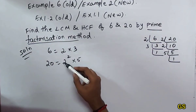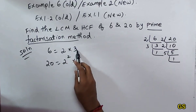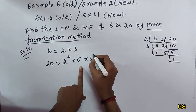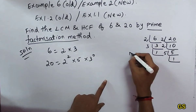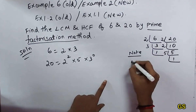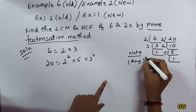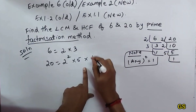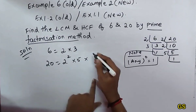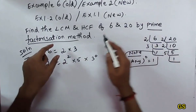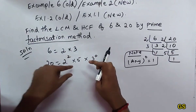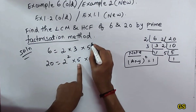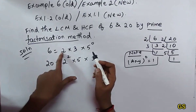Now we identify all prime factors present. The prime bases are 2, 3, and 5. Note that 3 does not appear in 20, so we write 3 power 0 for 20. Similarly, 5 does not appear in 6, so we write 5 power 0 for 6. Anything raised to the power 0 equals 1. The prime factors involved are 2, 3, and 5.